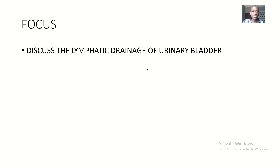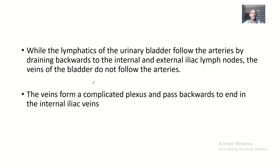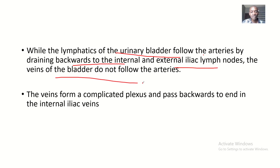The focus of this lecture is to discuss the lymphatic drainage of the urinary bladder, which drains to the internal iliac lymph nodes and the external iliac lymph nodes. The lymphatics of the urinary bladder follow the arteries by draining backwards to the internal and external iliac lymph nodes. The veins of the bladder, however, do not follow these arteries — they form a complex plexus and pass backwards.